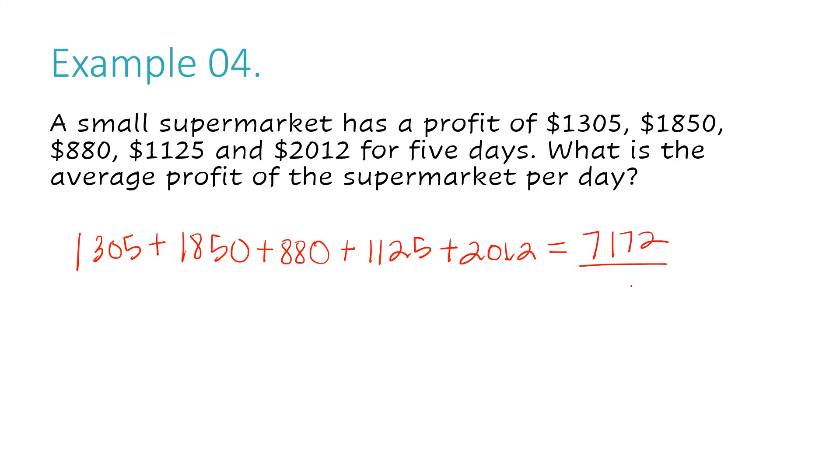Now I have to divide by how many numbers I have. I have 1, 2, 3, 4, 5 numbers. Now I take 7,172 divided by 5 and I get 1,434.4. If you were to type that in the calculator, you'd get 1,434 and 4 tenths.